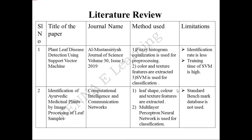These are the literature papers related to the project. In the first work, fuzzy histogram equalization is used for pre-processing. Color and texture features are extracted and an SVM classifier is used for classification. The limitation of this work is that the identification rate is less and the training time of the SVM is very high.